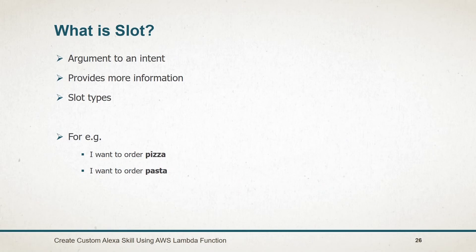A slot is an argument to an intent that gives Alexa more information about the request. Each slot maps with a slot type. In simple terms, the slot is a variable within an utterance and the slot type is just like a data type. For example, when the user says 'I want to order pizza' or 'I want to order pasta', the term pizza or pasta is a slot.